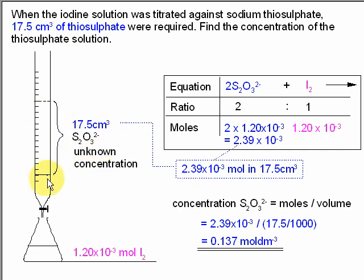To work out the amount of thiosulfate, we need to know the equation, which is 2 S2O3 2 minus reacting with 1 of the I2s, so a 2 to 1 ratio. We know the amount of iodine, so we multiply it by 2 to get the amount of thiosulfate.